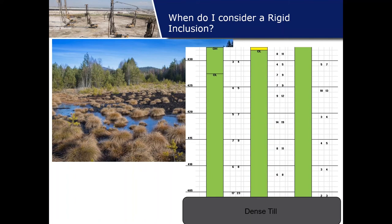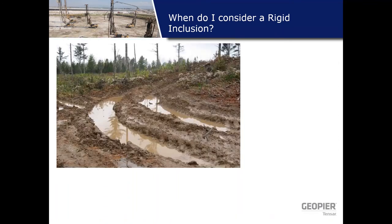That's the great thing about the rigid inclusion: instead of improving organics in place, let's bypass them with a rigid inclusion that's much stiffer than the surrounding soils and transfer those loads down to the till. In a similar situation in North Carolina, you may find residual soils in the Piedmont — silty sands and sandy silts with a varied weathering profile. Soils are typically more highly weathered near the surface and get better with depth as they approach parent rock.